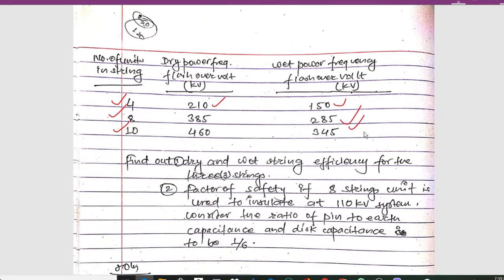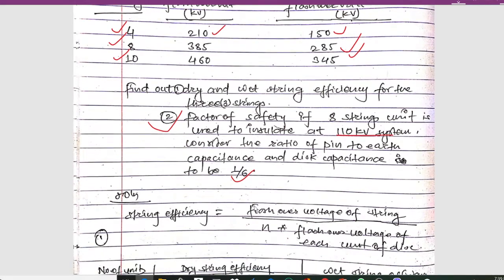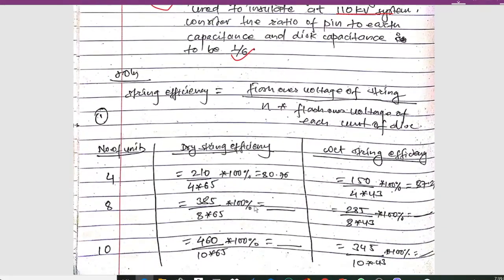We have to calculate the dry and wet string efficiency for 3 strings. In the second part, we have to calculate the factor of safety if an 8-string unit is used to insulate a 110 kV system, considering the ratio of pin-to-earth capacitance to disk capacitance to be 1/6. The string efficiency formula is: string efficiency = flashover voltage of string divided by (n × flashover voltage of each disk).